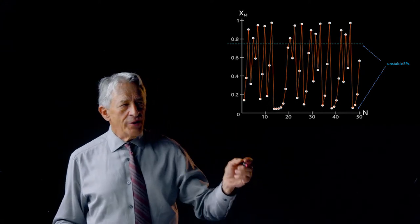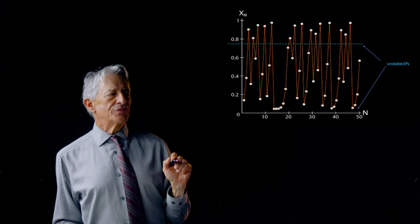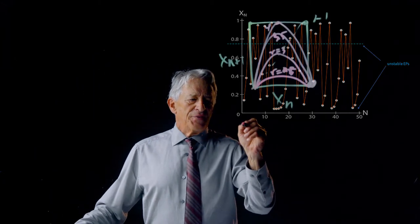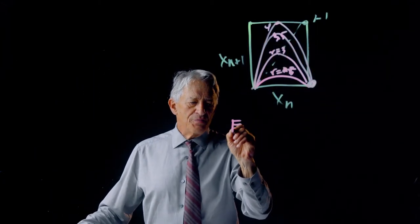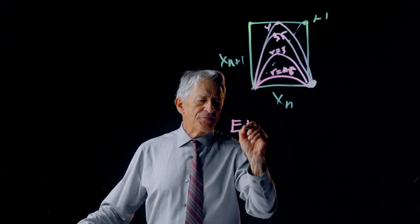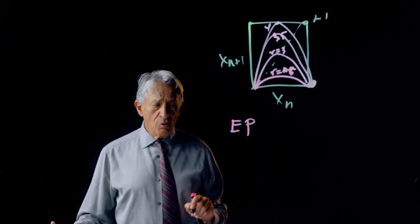So we have a sequence of bifurcations, and the sequence of bifurcations basically takes us from an equilibrium point.